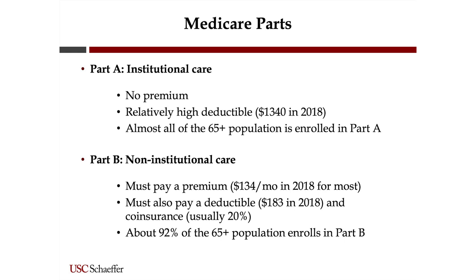You also need to pay a deductible for Part B — about $183 in 2018 — and a coinsurance of usually 20%. For some things there's no copay: hospice and home health, for instance, have zero copay. 92% of the 65-plus population enrolls in Part B, so you have a little drop-off, but most people do enroll.